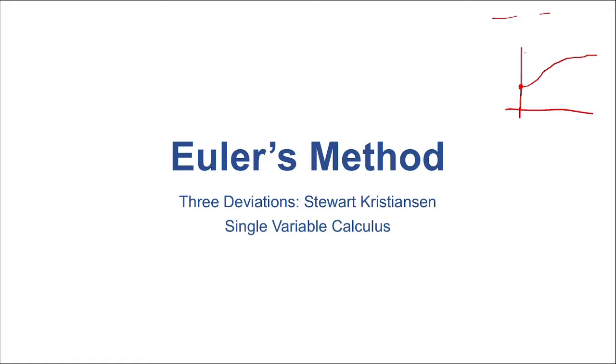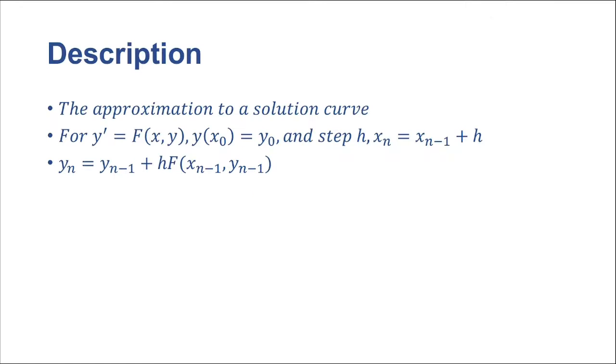Now we're going to start talking about Euler's method. Again, as I was saying, it's kind of an algorithm, so it's really an approximation for a solution curve. We say that y prime is equal to some function of the coordinate where we are - it's the slope where our coordinate is. And y of x_0 is going to be y_0, so y is a function of x.